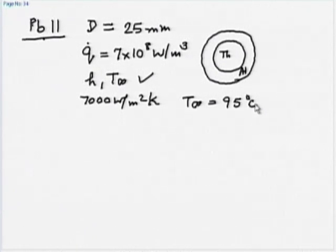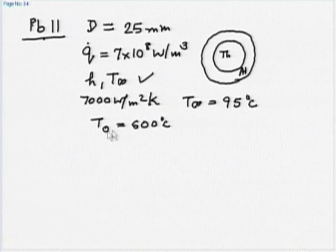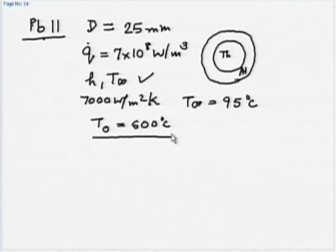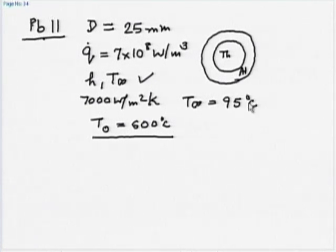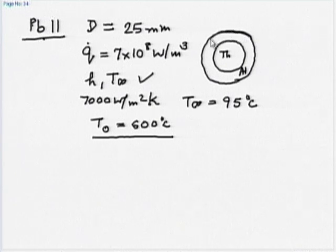For safe operation, the clad outside surface temperature should not exceed 600 degrees centigrade. This is the limit on the outside surface temperature. We are asked to find whether this cooling condition is acceptable — that is, with the given h and T infinity, will the heat generated be taken out such that the temperature on the outer surface of the clad does not exceed 600 degrees centigrade.